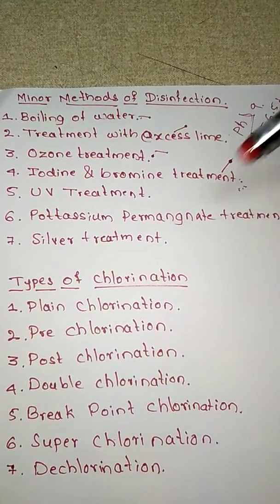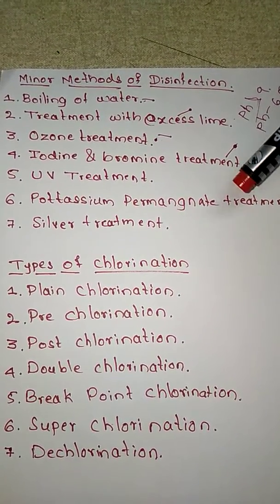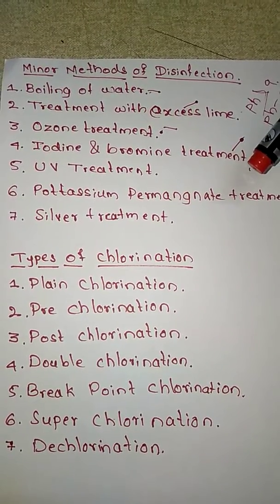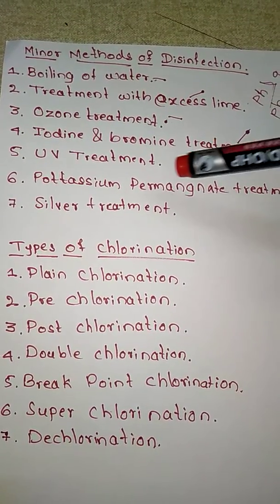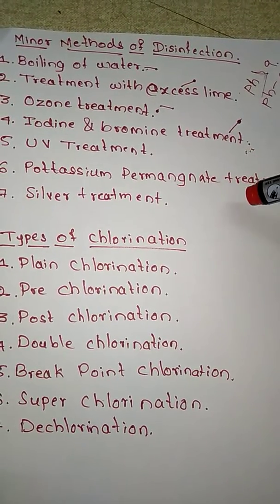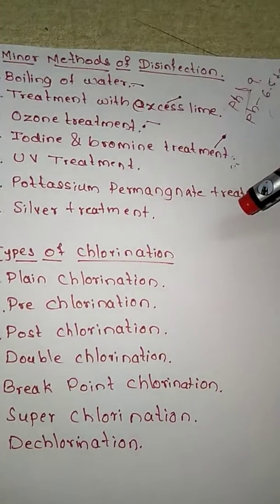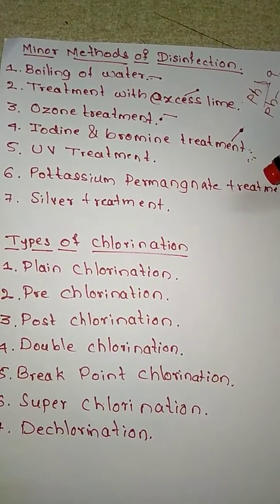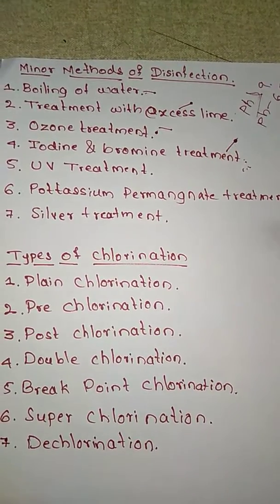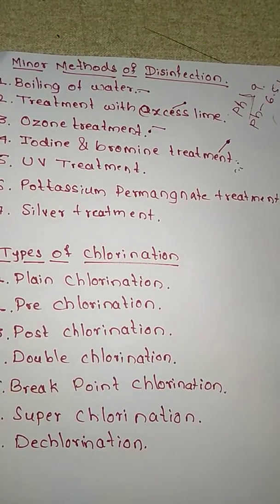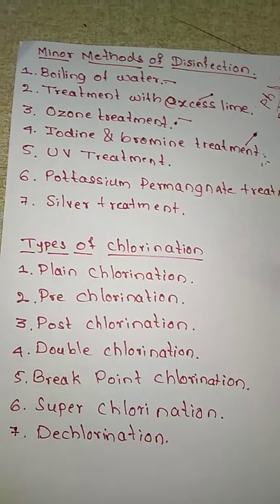The potassium permanganate treatment is used to disinfect well water. It has 98 to 100 percent removal efficiency. We dissolve potassium permanganate in a small quantity of water, mix it well, and add it to the well. The normal dosage is around 1 to 2 mg per liter and the contact period is 4 to 6 hours. After adding it, the well water should not be used for about 48 hours due to residual smell.